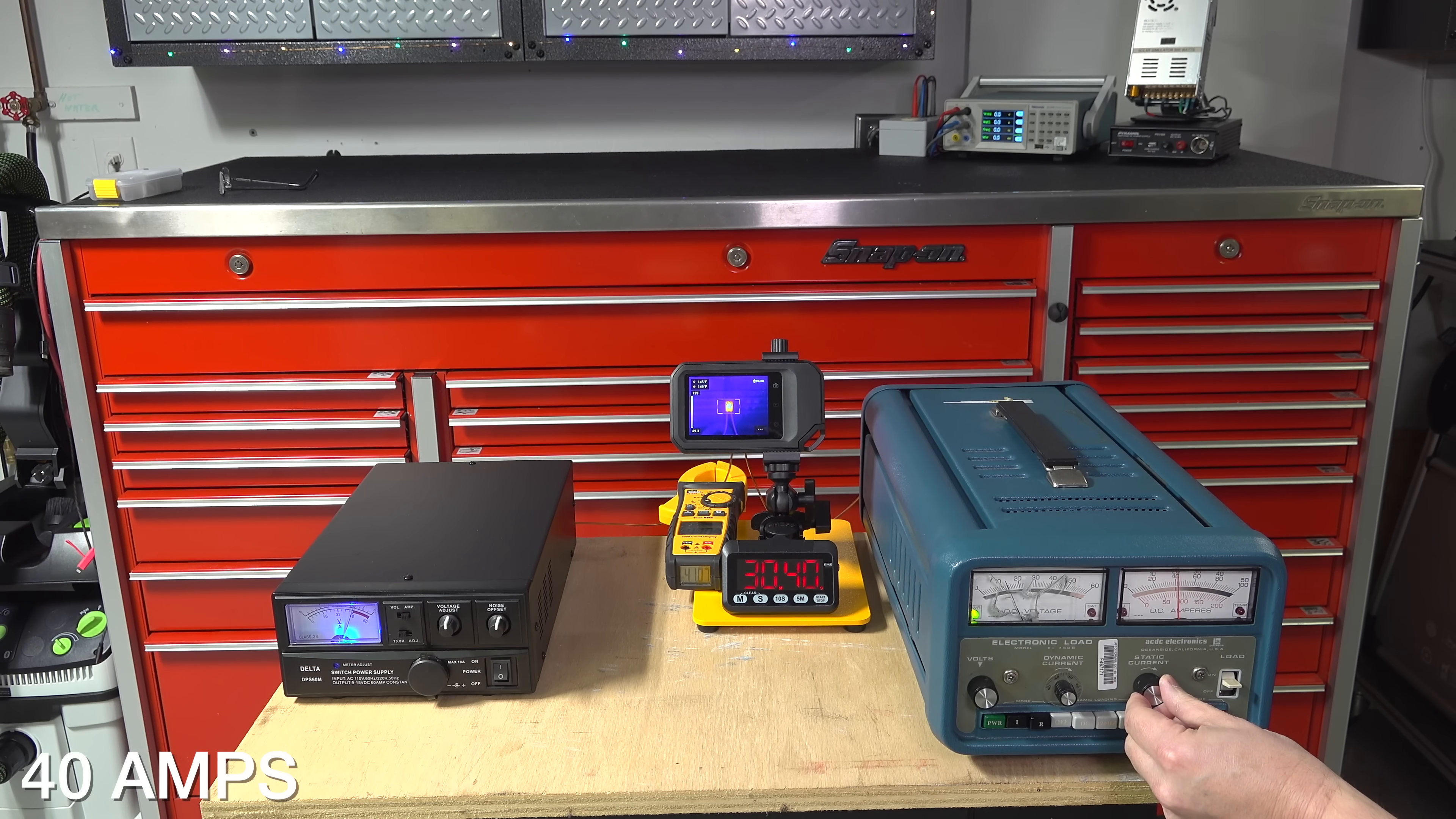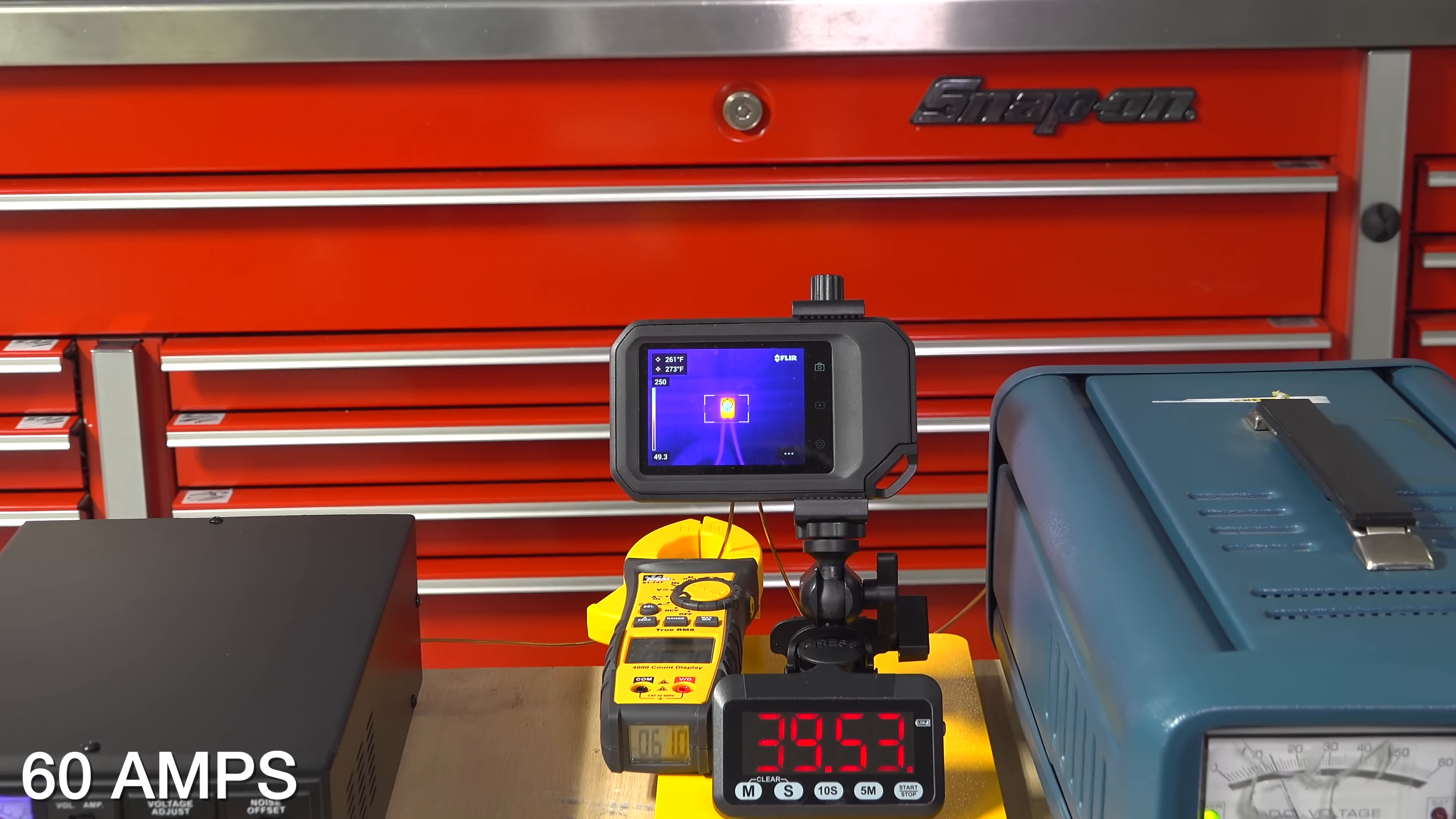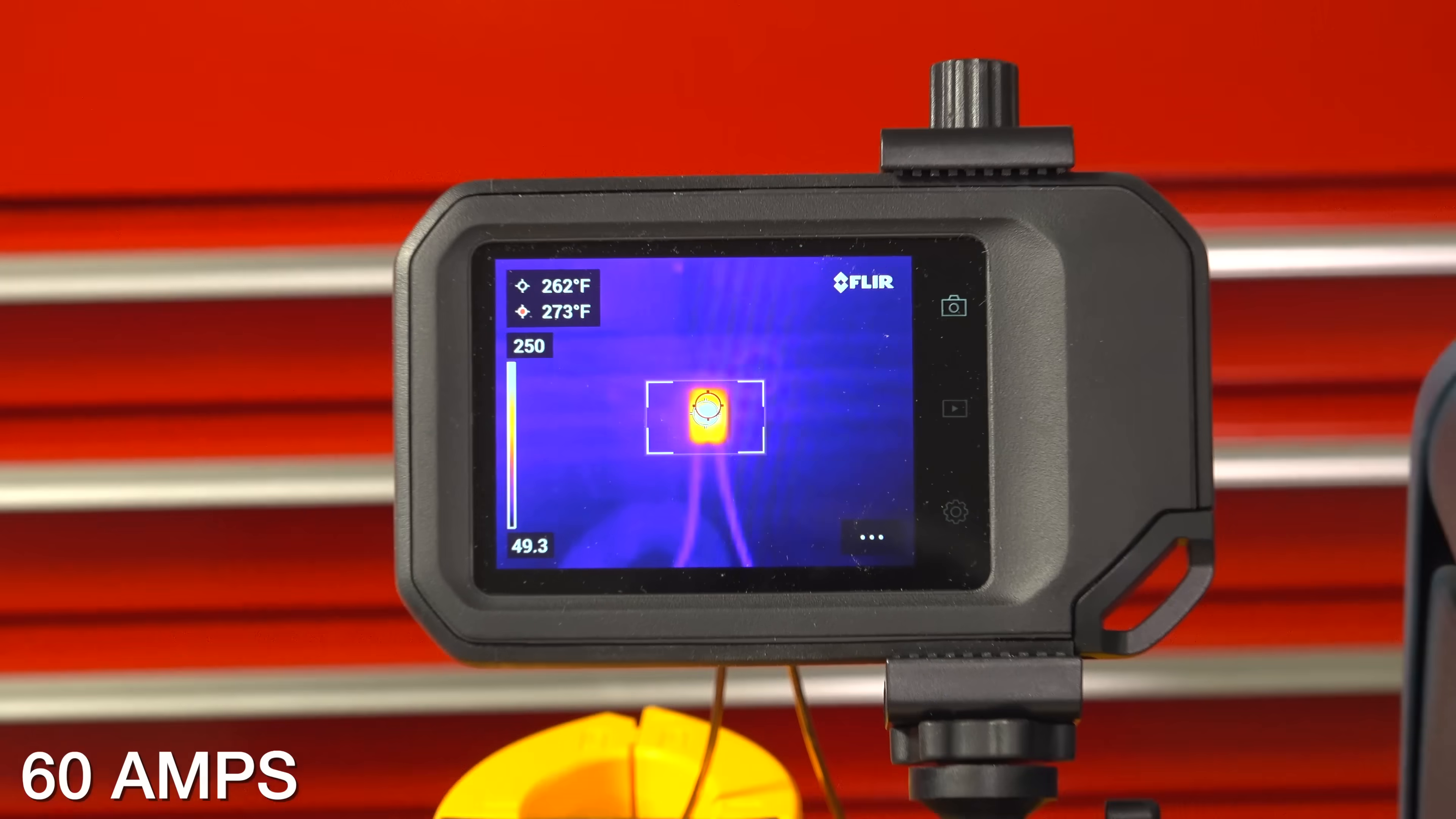Now we're going to do the final test and increase our amperage to 60 amps. Now old houses used to have 100 amps for the entire house. So 60 amps is a lot of power and this is the maximum amount I can do with this setup. After 10 minutes, this was the result at 60 amps. Our connector had reached 273 degrees which is definitely hot but we're at three times the rated capacity.